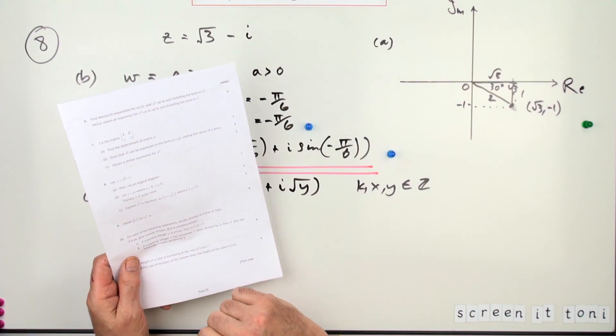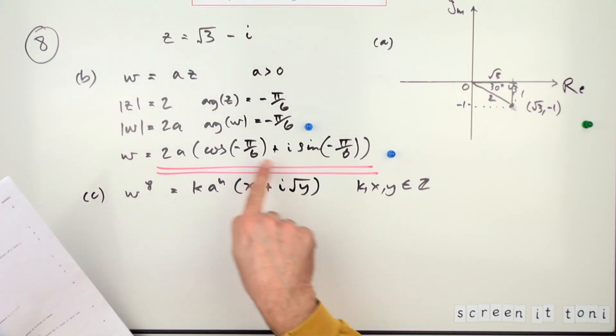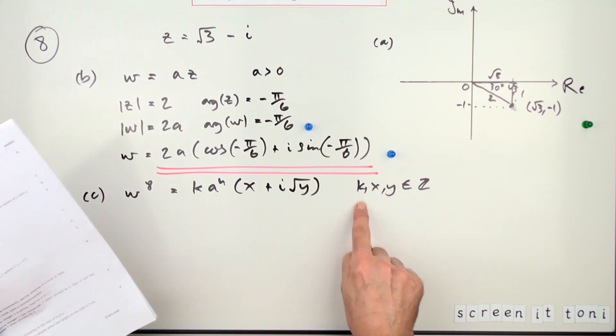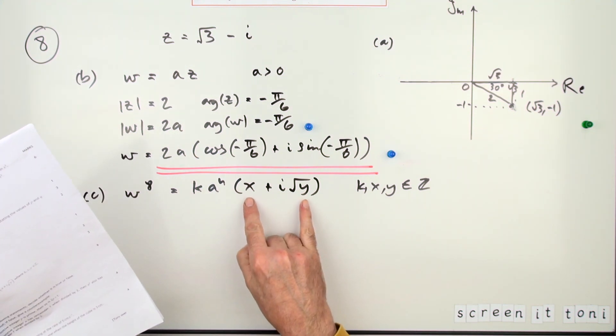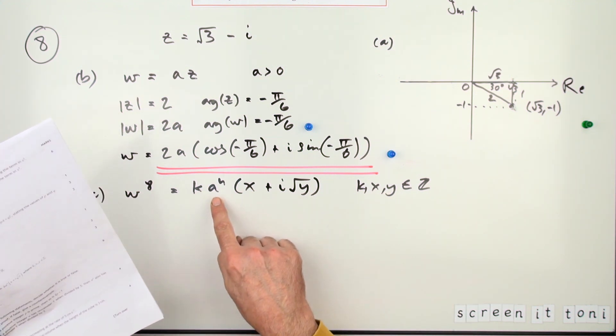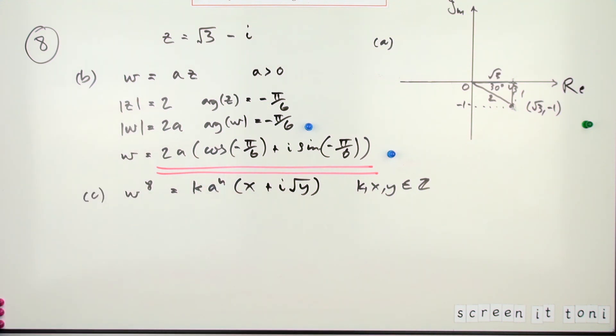Now part C, for three marks: express w to the power eight in this form here, where it's mentioning x and y as integers, but it's got some number at the front and it's got a to the power n, which it would be anyway. Well, w to the power eight will be this to the power eight, so it will be 2a·cos...